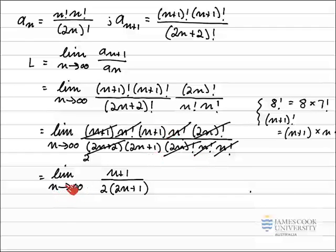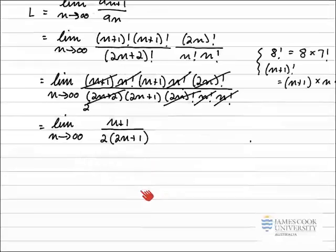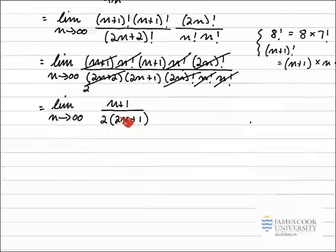Now we think about evaluating the limit by substituting in. As n approaches infinity, the top line approaches infinity and the bottom line also approaches infinity, so we have an indeterminate form and need to do more work. The usual approach when the top and bottom both tend to infinity is to look for the highest power of n and divide top and bottom by it. Here the highest power is just n.